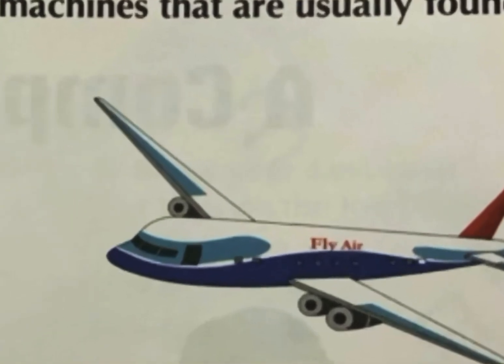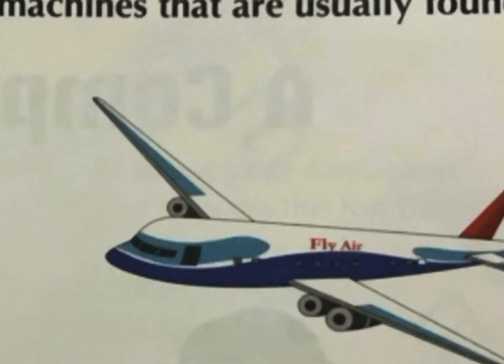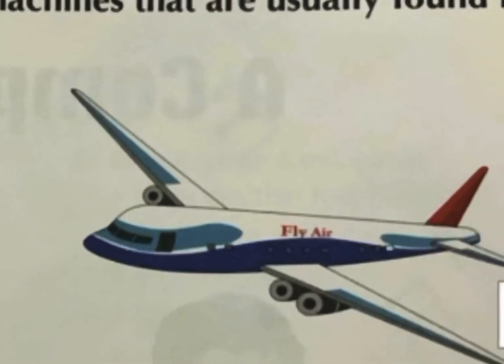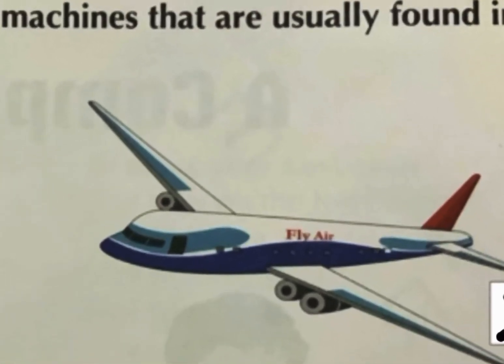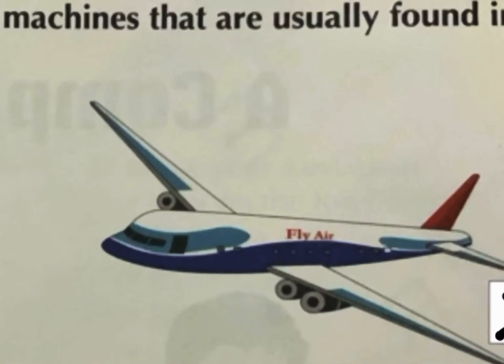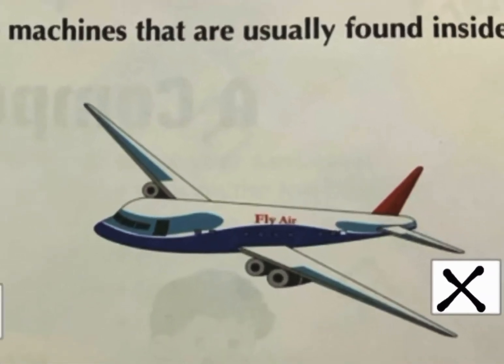What is it? It is an aeroplane. Aeroplane kahan pe fly kertae hain? That is outside the house. So, is it inside or outside the house? It is found outside the house. So, yaan pe cross karte hain. Because yeh ghar ke andar nahi hoti hain. Very good.